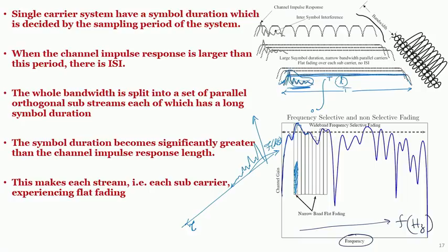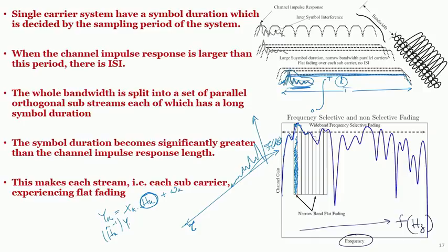Each subcarrier sees a single equivalent path and hence experiences flat fading for that particular path. Taking one subcarrier at a time, at the receiver the received signal x(k) gets multiplied by h(k), the flat fading equivalent of the channel. The received signal structure in the frequency domain allows very simple scalar equalization: if we know h_hat, we take its inverse and multiply with y_hat, leaving the desired signal x_hat plus processed noise h_hat^{-1} w(k).